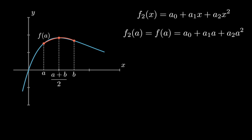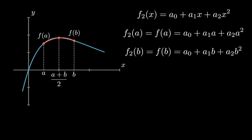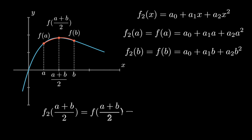For the second point (b, f(b)), we substitute x = b and f̃ = f(b) to get the second equation. Similarly, substituting the midpoint (a+b)/2 and f((a+b)/2) gives us the third equation.